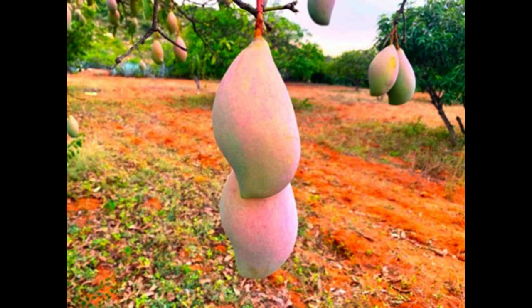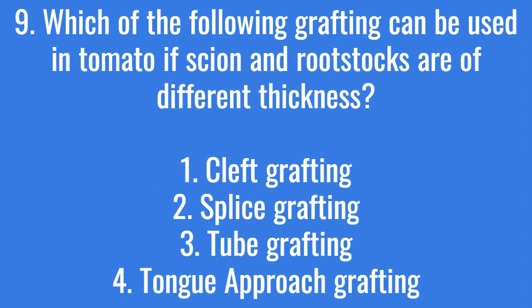Totapuri mangoes are medium to large, oblong-shaped with a pointed base and golden-yellow color. Which of the following grafting methods can be used in tomato if scion and rootstocks are of different thickness? The correct answer is option 1: cleft grafting.